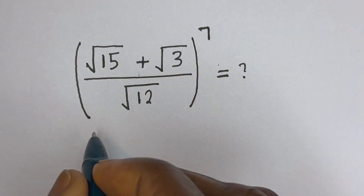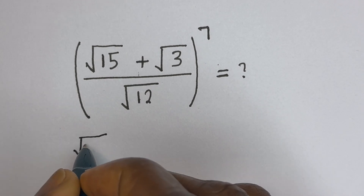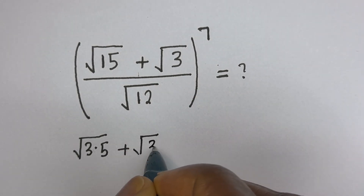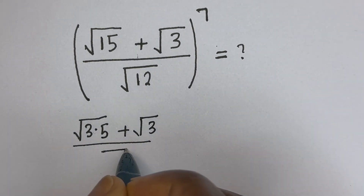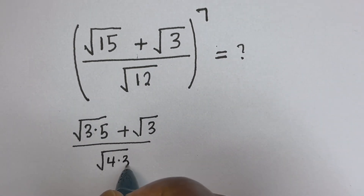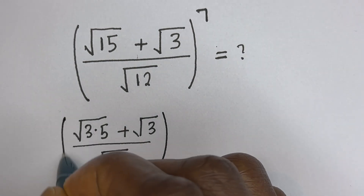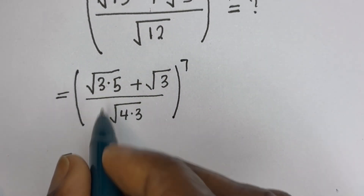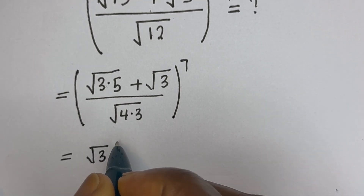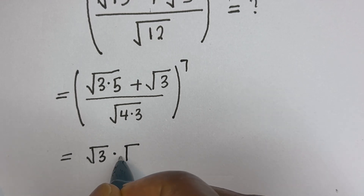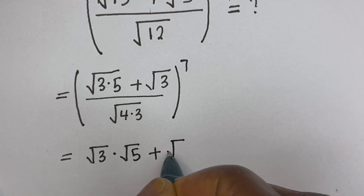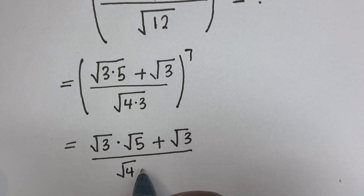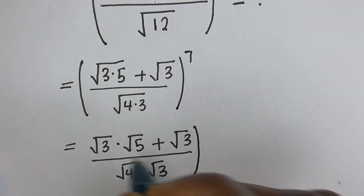Square root of 15 can be written as square root of 3 multiplied by 5, plus square root of 3, divided by square root of 12 which can be written as square root of 4 multiplied by 3, all to the power of 7. This is equal to square root of 3 multiplied by square root of 5 plus square root of 3, divided by square root of 4 multiplied by square root of 3, all to the power of 7.